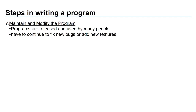The last step is maintenance. This is when programs are released and used by many people but still may have bugs. For example, when Windows 10 is released, it still has bugs or crashes, so you're constantly getting updates — that's called maintaining the program. Just because you're done writing code and releasing it to the public doesn't mean you're done. Maintenance is often the most expensive and extensive phase because when you release a program, it could be out there for five or ten years. You have to fix bugs so customers are happy, and you may want to add new features to stay current in the market.